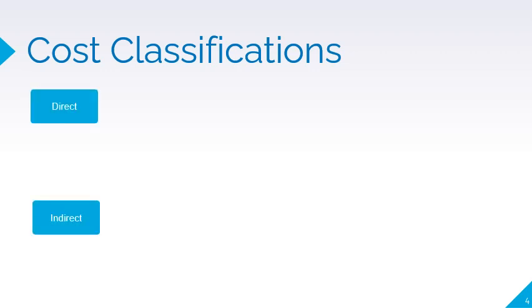Costs can be classified in a number of ways. Among the several classifications, the following are the most important ones. Costs can be classified as either direct or indirect. Direct costs are those that can be easily traced to a particular cost object. Indirect costs, on the other hand, are those costs that are difficult to trace to a particular cost object or are common to several cost objects. As discussed earlier, direct costs are traced to a particular cost object, whereas indirect costs are allocated to several cost objects.